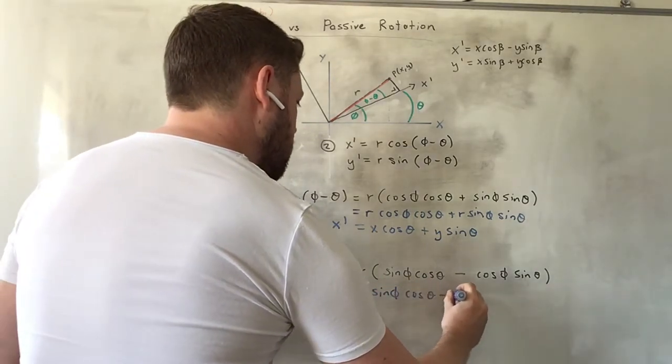We can do the same thing for the y-dash coordinate. So if we multiply it out, we get r sine phi cosine theta minus r cosine phi sine theta. And then looking back here, we can replace r cosine phi with x.